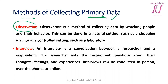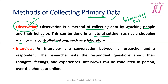Primary data can be collected with observation. Observation is a method of collecting data by watching people and their behavior. This can be done in a natural setting such as a shopping mall or a controlled setting such as a laboratory. For example, if you want to study the behavior of a customer regarding a particular product or their shopping, observation is the greatest way to get behavioral data.